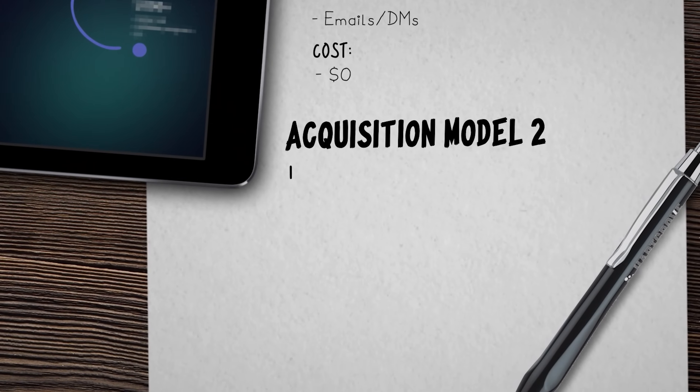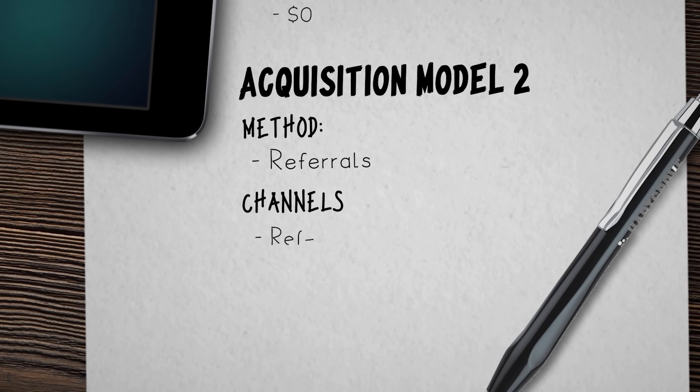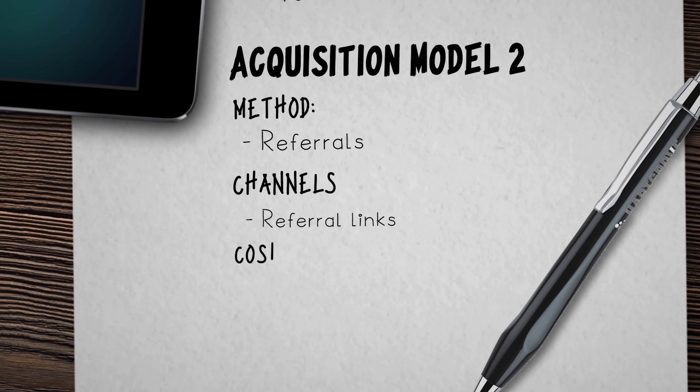This next model will take us from five up to a hundred users. For the method, we're going to use referrals, with the channel being referral links that our current early users can share. The cost depends — you could offer a cut of revenue for every new user they refer, but I actually don't think that's necessary. If you truly served your first five early adopters well and made them feel part of the project, chances are they'll refer new users without getting paid. Instead, offer new users a big discount for joining early, making both your advocates and the new users feel special for being part of something up and coming.